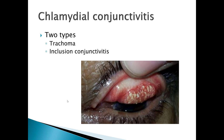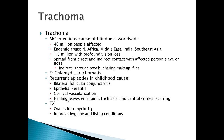There are two different types of chlamydial conjunctivitis: trachoma and inclusion conjunctivitis. Trachoma is the most common infectious cause of blindness worldwide, with about 40 million people affected. The endemic areas are North Africa, Middle East, India, and Southeast Asia, and about 1.3 million people have profound vision loss. It spreads through direct and indirect contact with affected person's eyes or noses, including towel sharing, makeup sharing, and flies. The etiology is Chlamydia trachomatis.